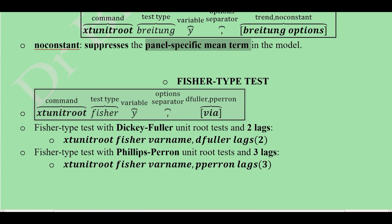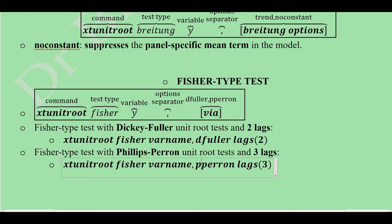The Fisher test uses the same general command structure, specifying the variable Y followed by a comma. If we calculate the Fisher test using the Dickey-Fuller method, we write the 'dfuller' keyword; for the Phillips-Perron test, we write 'pperron'. For example, a Fisher test with Dickey-Fuller and two lags, or with Phillips-Perron and three lags — these are our choices for the lags.